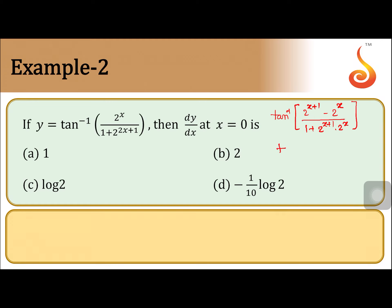We get the same thing. Tan inverse — we get 2 to the power x common, giving 2 minus 1, divided by 1 plus 2 to the power x plus 1 into 2 to the power x. Both are the same. So we apply the formula tan inverse a minus b by 1 plus ab.